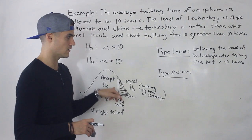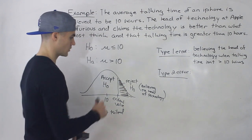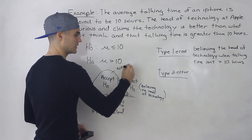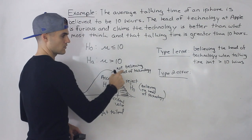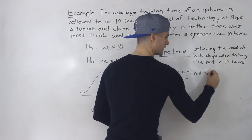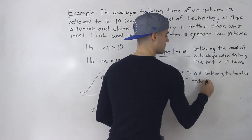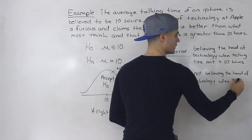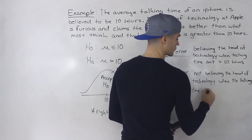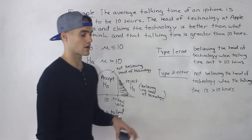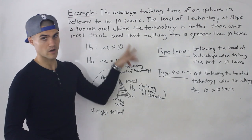Type 2 error is when you fail to reject the null when the null is actually false. Accepting the null here means not believing the head of technology. So a type 2 error would be not believing the head of technology's claim when the talking time is actually greater than 10 hours — there's not enough evidence showing it's greater, but in fact we should believe them.